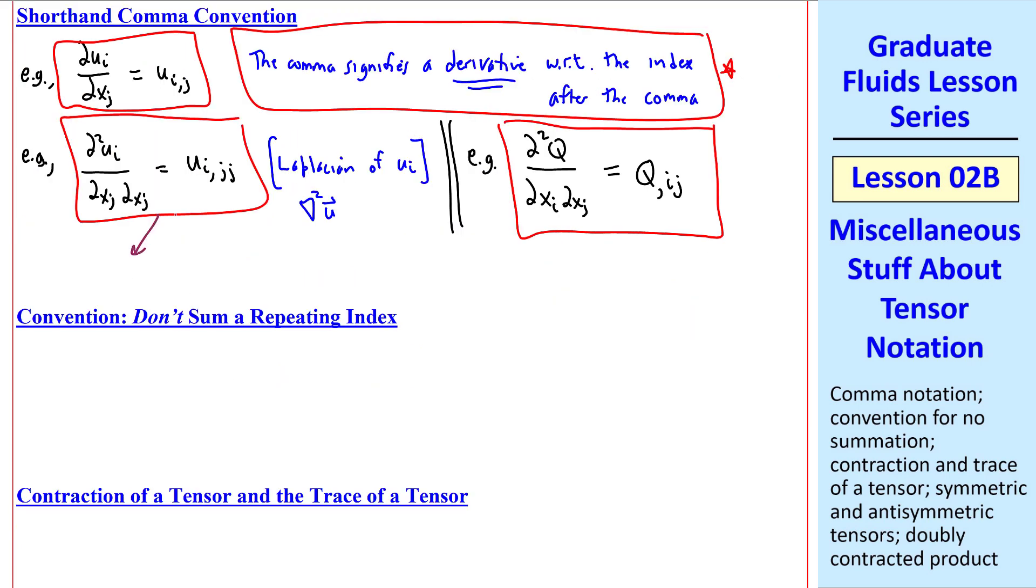Now let's consider this example. Since the j's are repeated, we know that we're summing over the j's. What if we don't want to sum over the j's? The convention is to write it this way, and in parentheses simply say, j not summed. Or in comma notation, we write ui comma jj, j not summed. This is the way you would indicate to the reader that you're not summing these j's. But if you see it expressed like this, you assume that you do sum the j's, since they're repeated indices.